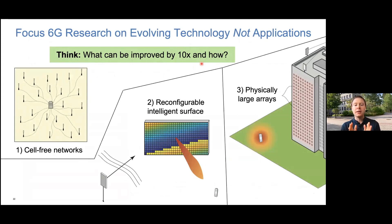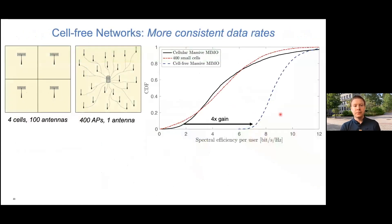I'll provide three examples of interesting enabling technologies for 6G: something I call cell-free networks, something I call reconfigurable intelligent surfaces, and something I call physically large arrays. I have one slide for each of them.